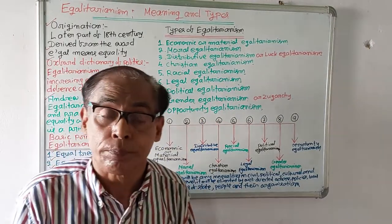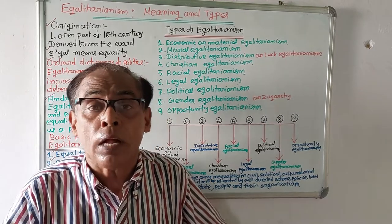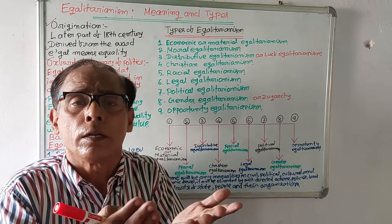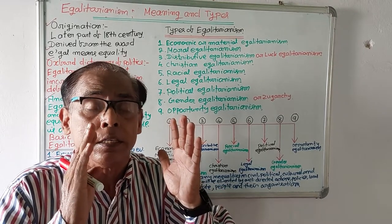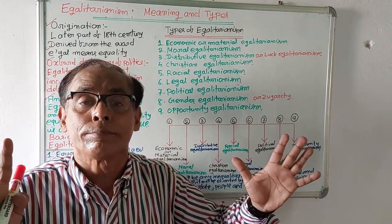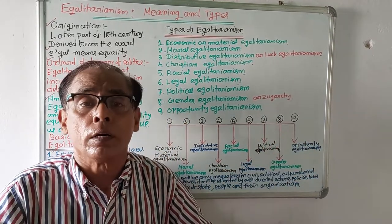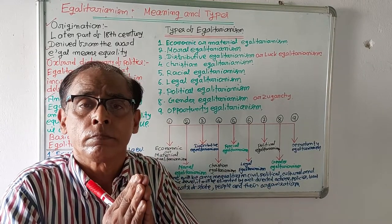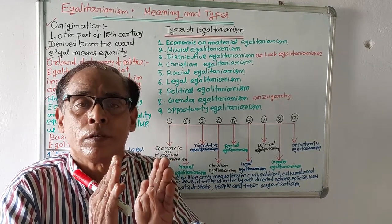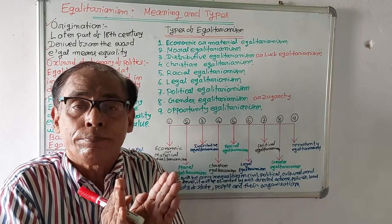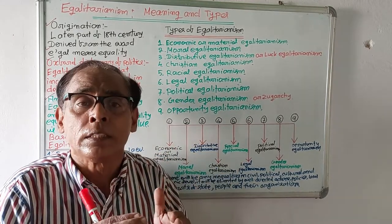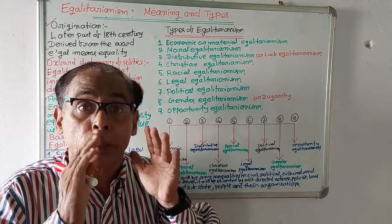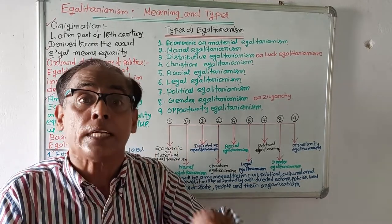Number two: moral egalitarianism. Moral egalitarianism means all people must be treated equally. All people must be given equal status and prestige. All people are equal — they are all human beings and must be given equal respect and status; they must be considered as human beings.